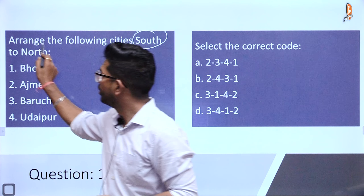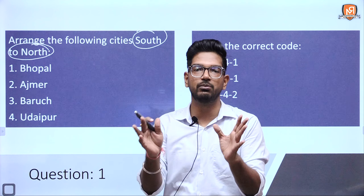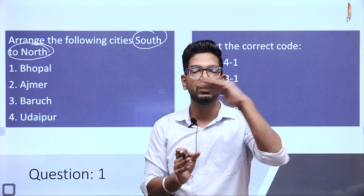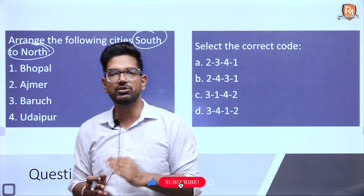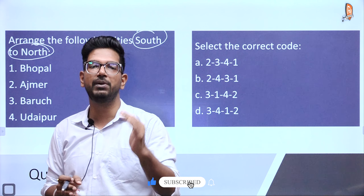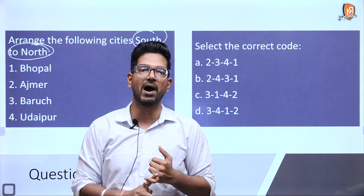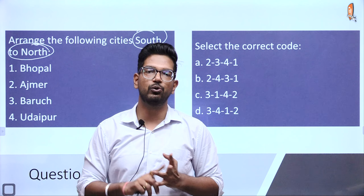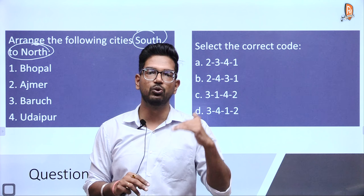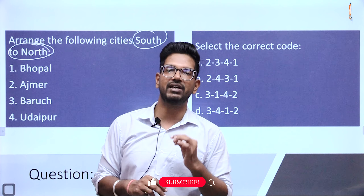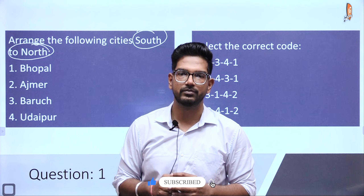Hello everyone, welcome to Raj Manhotra's IAS Academy. My name is Vivek Sharma and we are dealing with places that are in news. Today we have an article in the Hindu newspaper, front page article, which talks about 15 projects which are aiming to decongest Delhi roads. In this particular piece of news, we have given some important map work which we have to look upon.